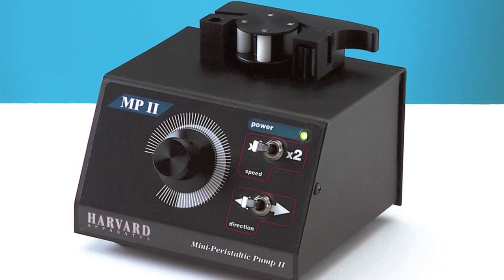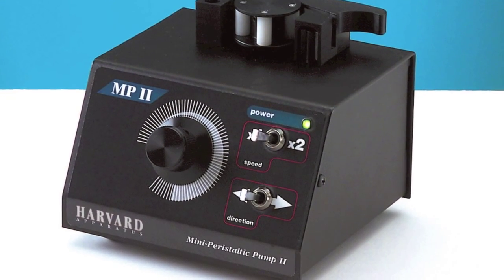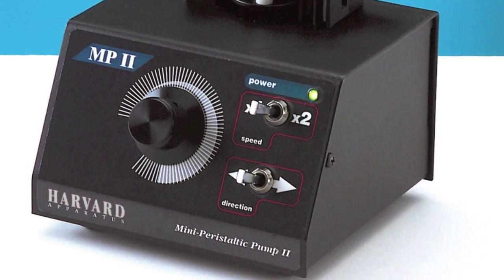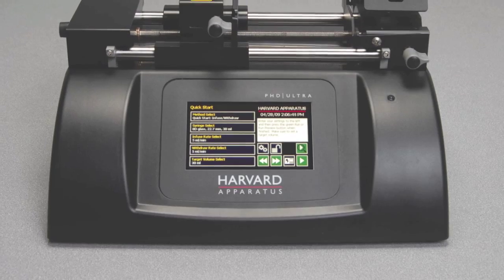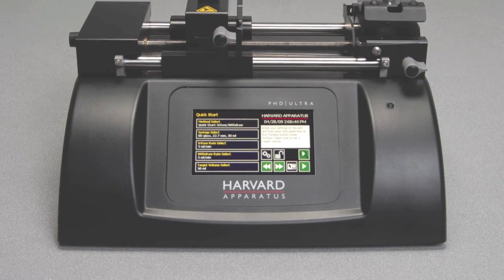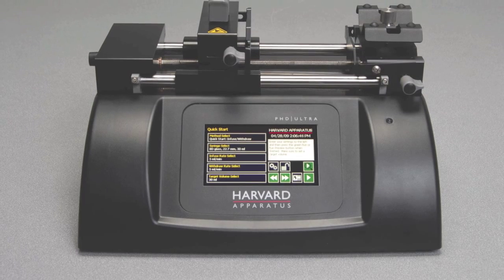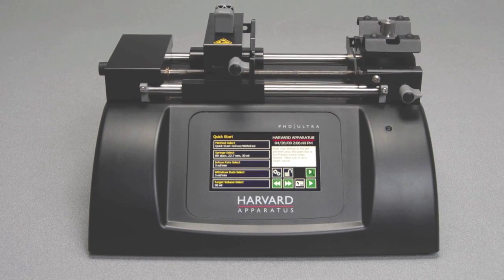Peristaltic pumps are also commonly used to drive perfusion since they allow for use of open-solution reservoirs, as well as allowing direct control of the perfusion flow rate. Syringe pumps are also useful for the direct control of flow rate and delivery of experimental solutions.